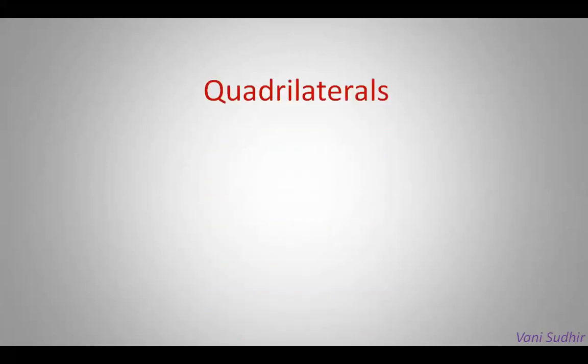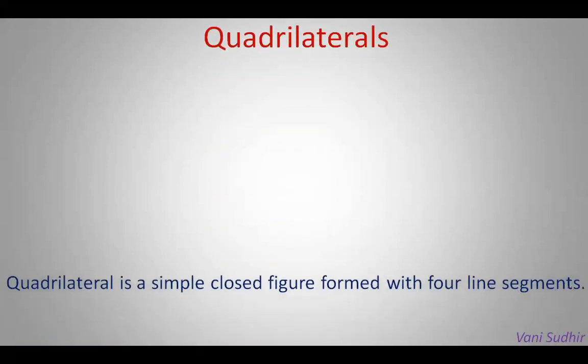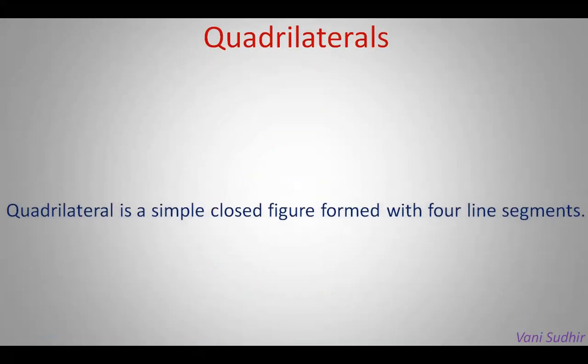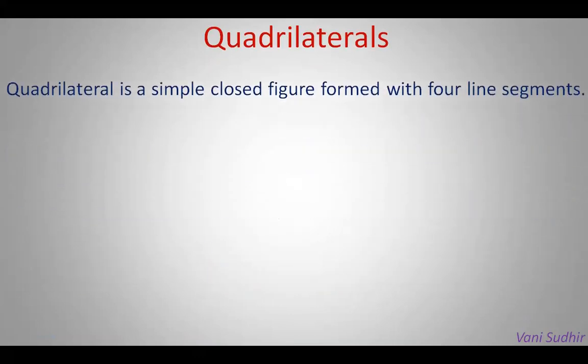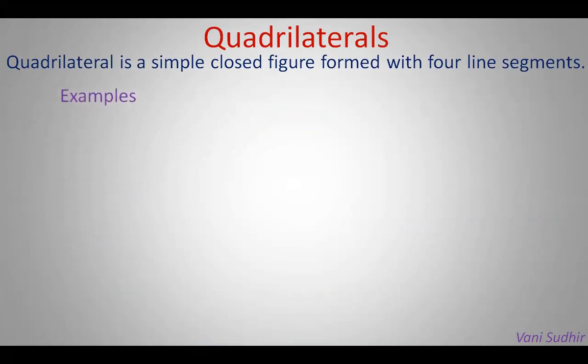What is a quadrilateral? It is a simple closed figure formed with 4 line segments. Let us see some examples and non-examples.